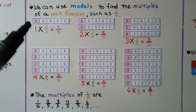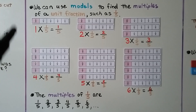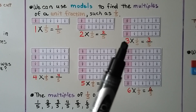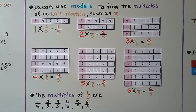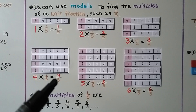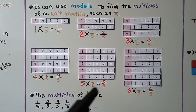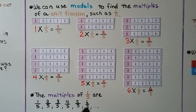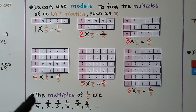1 times 1/5 equals 1/5. 2 times 1/5 equals 2/5. 3 times 1/5 equals 3/5. Do you see the pattern? 4 times 1/5 equals 4/5. 5 times 1/5 equals 5/5. And 6 times 1/5 equals 6/5. The multiples of 1/5 are: 1/5, 2/5, 3/5, 4/5, 5/5, 6/5. Because it has a 1 as a numerator and it's a unit fraction, its multiples have the same denominator, and the numerators are going up like counting numbers 1, 2, 3, 4, 5, 6, and so on.